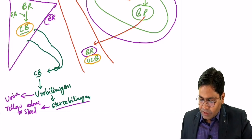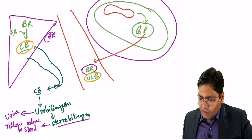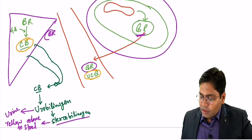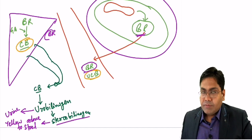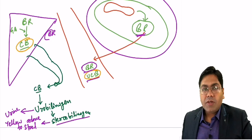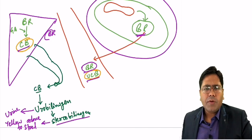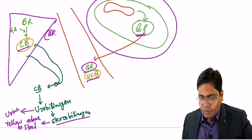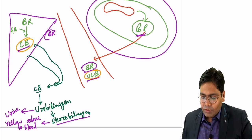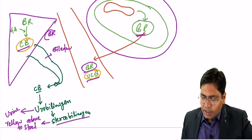This is how bilirubin is formed. It comes into circulation as unconjugated bilirubin, goes to the liver to form conjugated bilirubin, and from the liver this conjugated bilirubin comes out via the bile duct into the intestine.